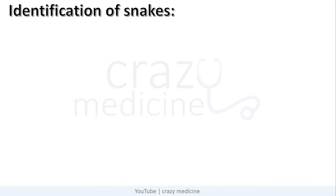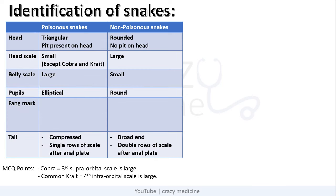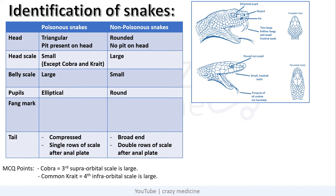Coming to identification of snakes — how to differentiate poisonous from non-poisonous snakes. The head is triangular and contains a pit in poisonous snakes, and is rounded with no pit in non-poisonous snakes. Head scales are small except in cobra and krait in poisonous snakes, and large in non-poisonous snakes. You can appreciate these things in the figure. Pupils are elliptical in poisonous snakes and rounded in non-poisonous snakes. The most important thing is the fang mark — in poisonous snakes you will see two big holes or fang marks separated either one or half a centimeter apart. In non-poisonous snakes there will be two semicircular parallel lines of teeth marks.